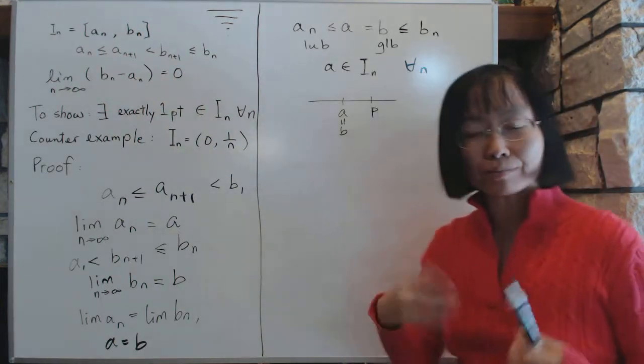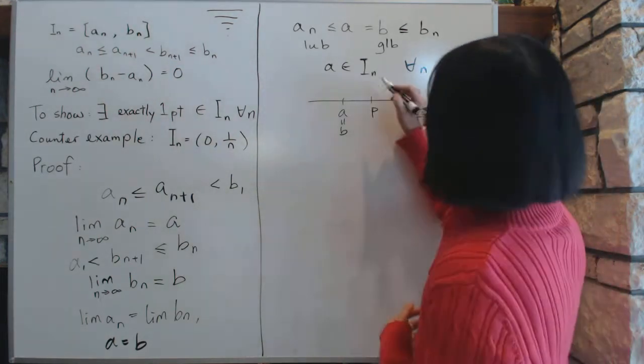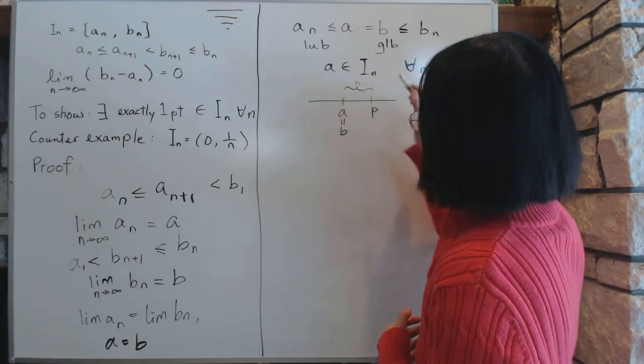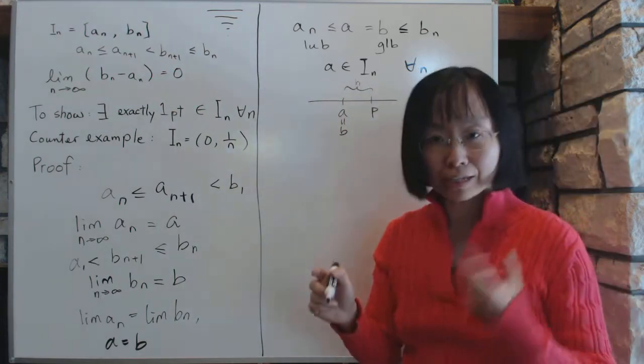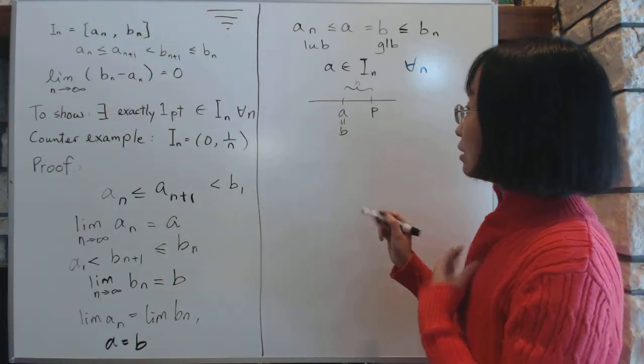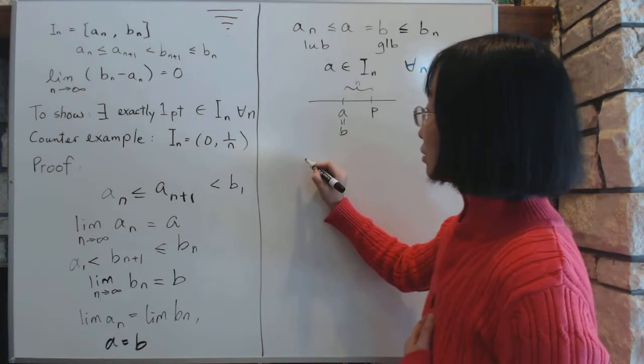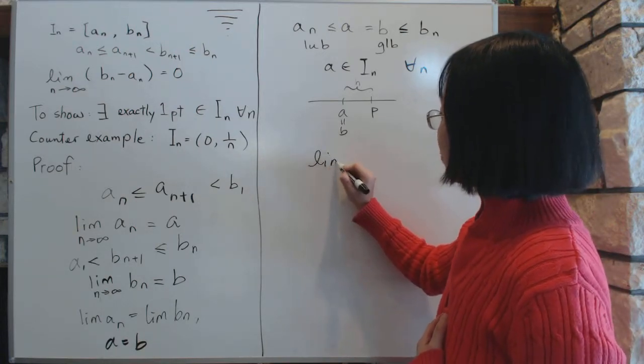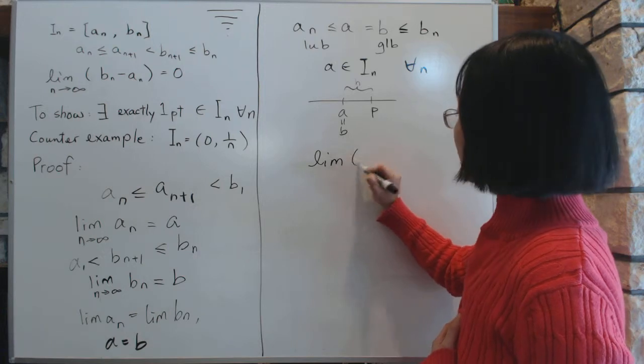What if there's a different point that also belong to I_n? Well, that's not possible because, let's say your distance here is called h. Because if a and p are different points, they have a distance. And the distance is h.